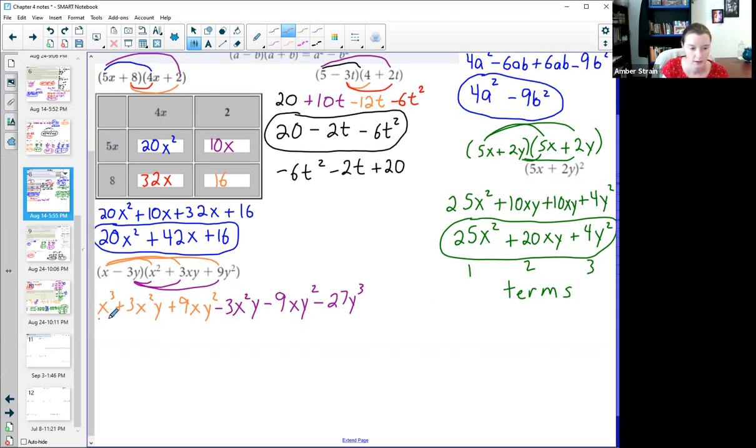Now I go through and combine my like terms. Here's an x cubed. No other x cubes. Be very careful right here. I have a term where I have two x's and one y. He has one x and two y's. He has two x's and one y. Positive 3 and negative 3. They cancel each other out. Next, I look for a term with one x and two y's. Here he is. 9 minus 9. They cancel each other out. And then last, there was a single minus 27 y cubed.